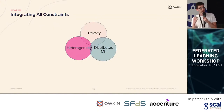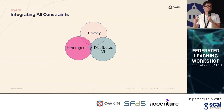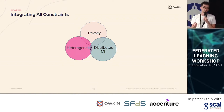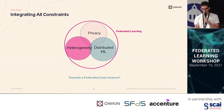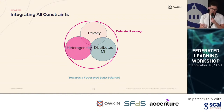The last challenge is to integrate all constraints. We have the privacy constraints, we have the heterogeneity constraints. If you have a lot of heterogeneity, maybe you want to communicate much more often — but is that compatible with your privacy budget? And if you want to distribute a fancy machine learning model and set up a novel algorithm to do so, is it private? I think this is what federated learning is really about: integrating all these constraints into a single thing that works.